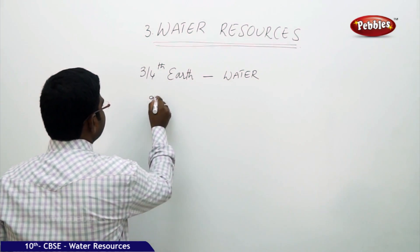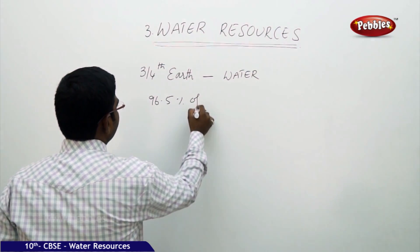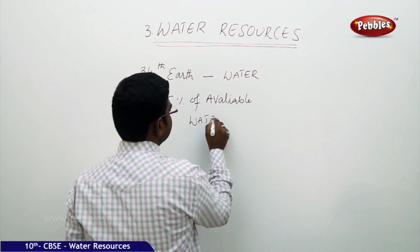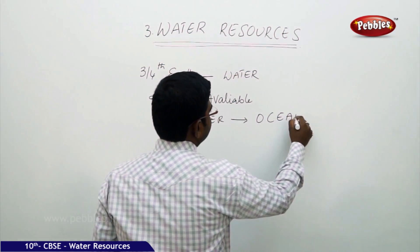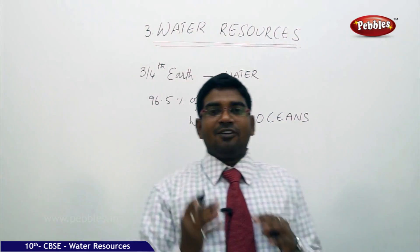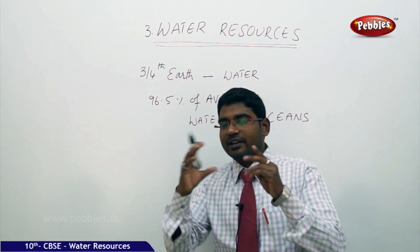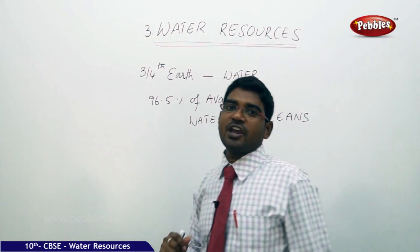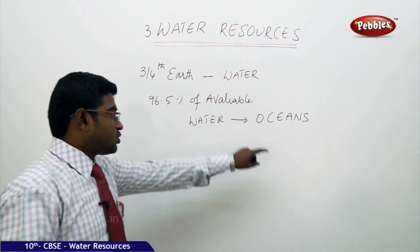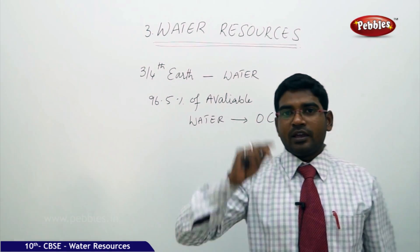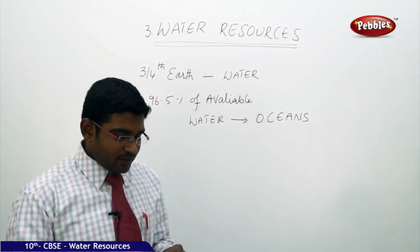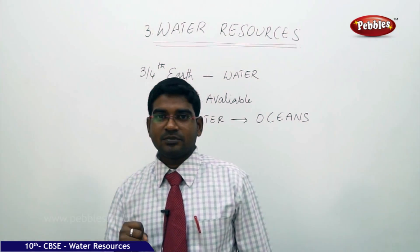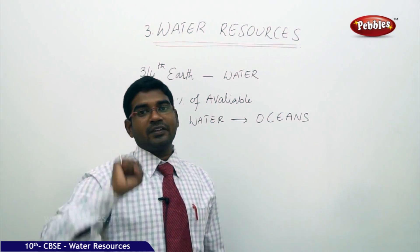Let us look at the actual statistics of water availability on earth. We know that 96.5% of available water is present in the form of oceans. If we take the entire water body as 100%, then 96.5% — the lion's share — is stored in the form of oceans. On planet Earth, we have five major oceans: the Pacific Ocean, Atlantic Ocean, Arctic Ocean, Indian Ocean, and the Southern Ocean.